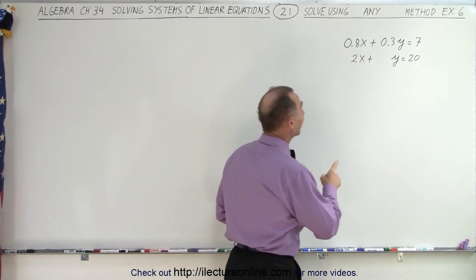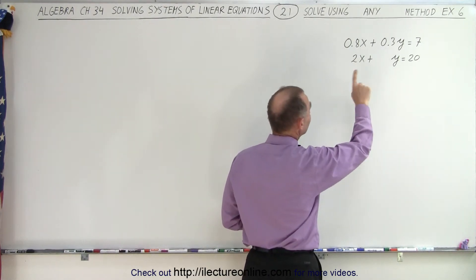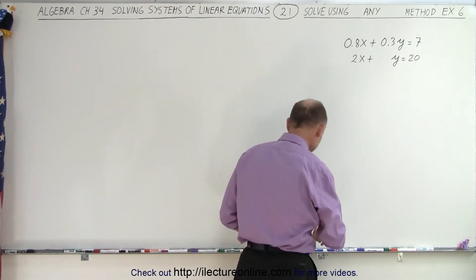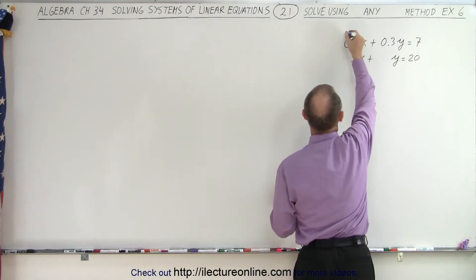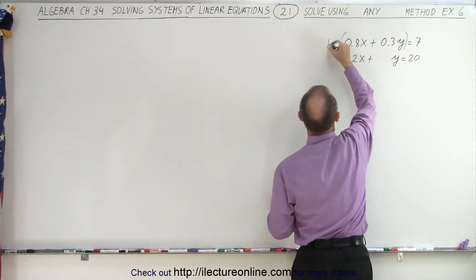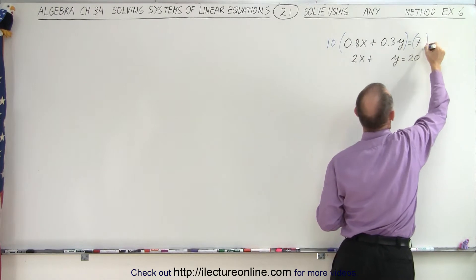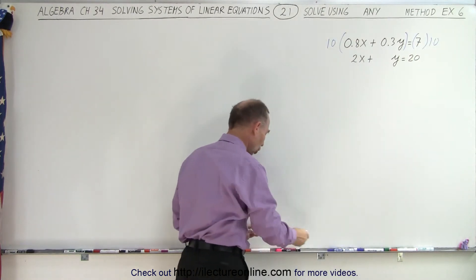So what we're going to do here is multiply both sides of the first equation by 10 to get rid of that decimal point. So multiply the left side by 10 and multiply the right side by 10. We'll leave the bottom equation alone.